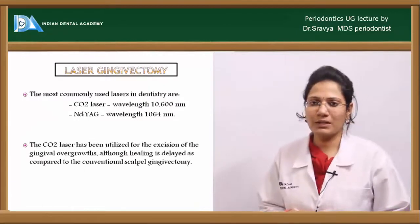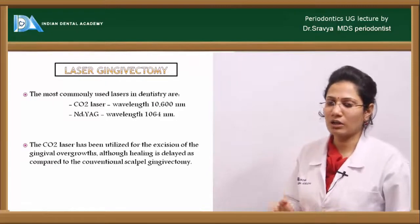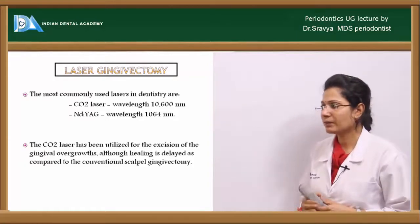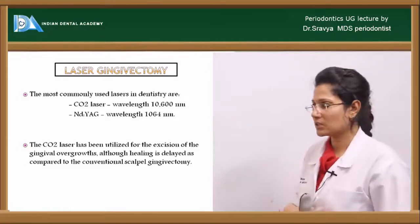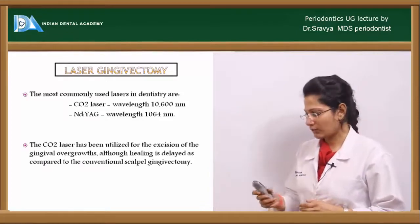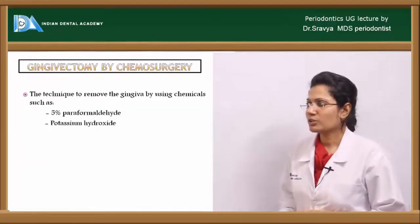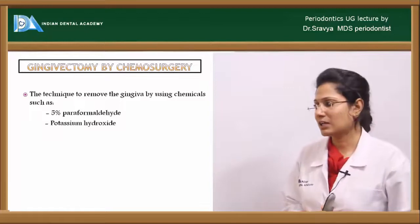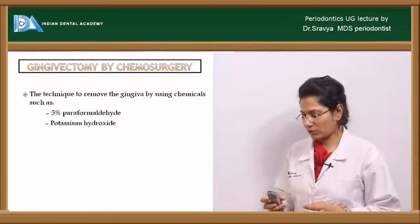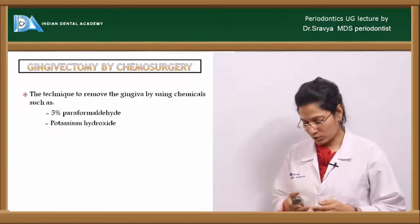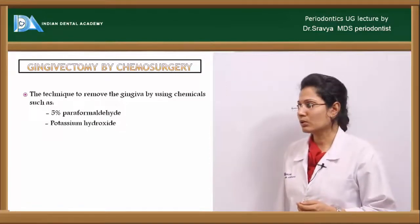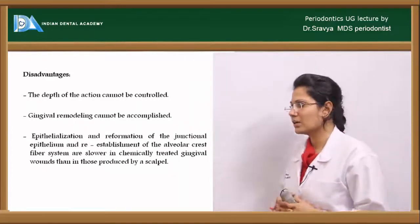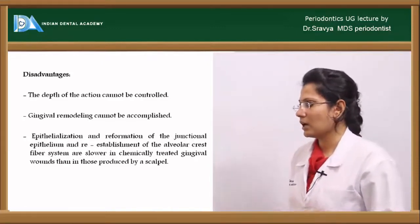Laser gingivectomy can be performed using a carbon dioxide laser or an Nd:YAG laser — neodymium-yttrium aluminium garnet laser — with a wavelength of about 1064 nanometers. Chemical gingivectomy uses agents such as 5% formaldehyde, paraformaldehyde, and potassium hydroxide, but these are not widely used because the depth of drug penetration cannot be controlled and gingival remodeling cannot be accomplished.